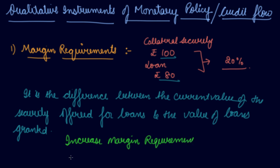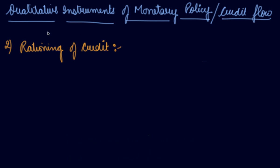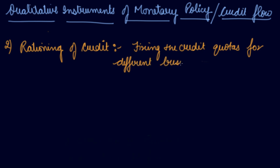Now rationing of credit means fixing the credit quota for different business activities. Like if you want to set up a factory of liquor, obviously because this is against socialism, the government will oppose this and will not allow you to take the loan from the bank.